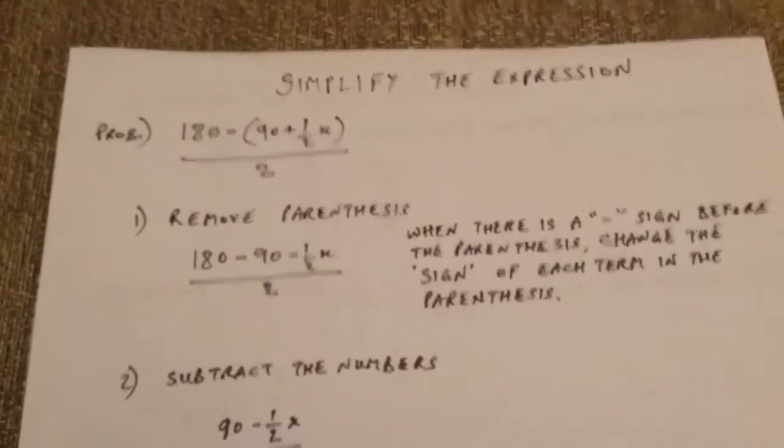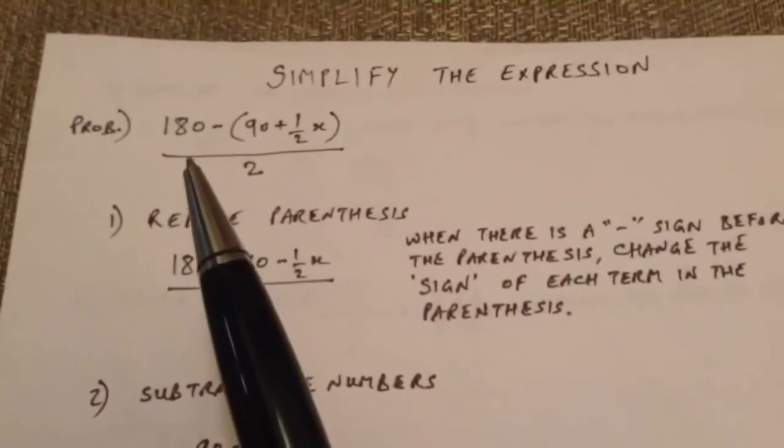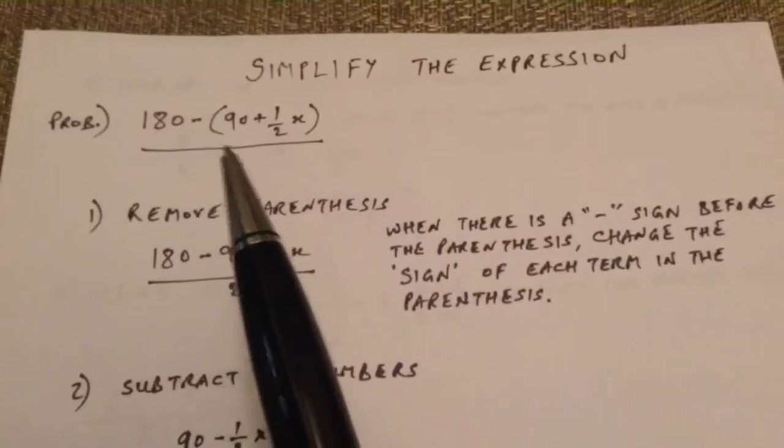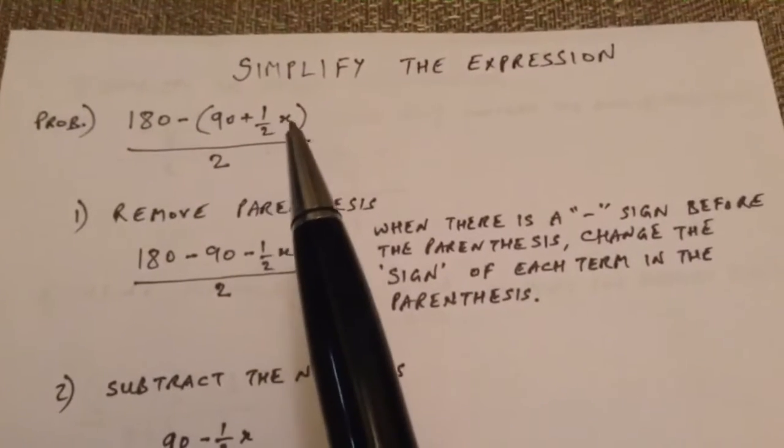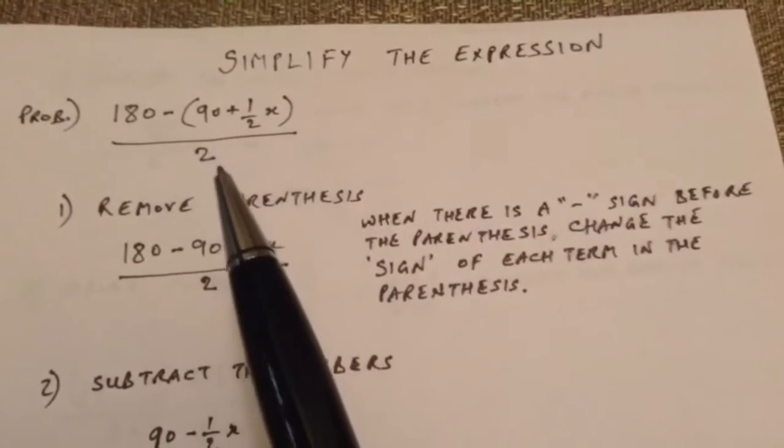Hi, everybody. Let's try to resolve this problem: simplify the expression. The expression that we have is 180 minus 90 plus one-half x in parentheses, the entire thing divided by 2.